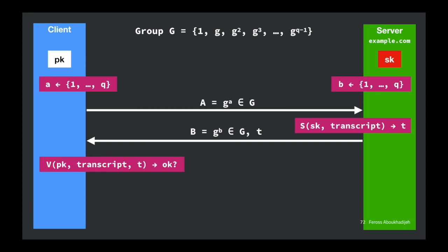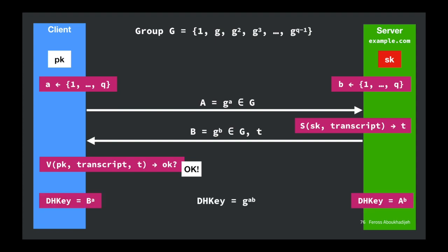Before the client derives the shared key, it first verifies that tag T is valid — calling the verification function on the public key with the transcript and the tag T received from the server. Only the owner of the secret key should be able to produce a tag T that returns 'accept'. If we're talking to a man in the middle, the tag won't be valid. If it returns 'accept', we go ahead and derive the DH key, which matches on the server side just like before.